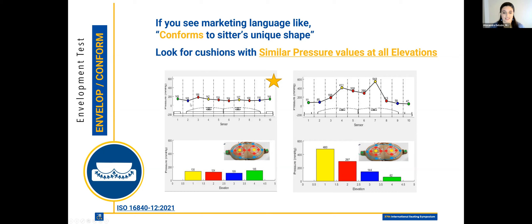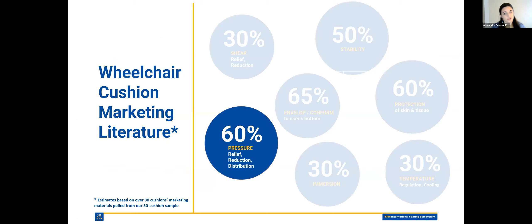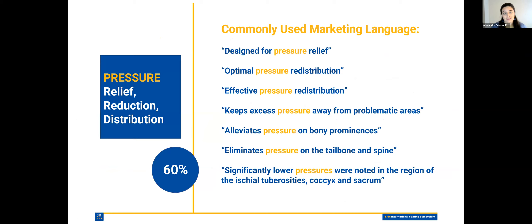Since we're talking about pressure, we can transition to the 60% of marketing literature that references pressure relief, reduction, and distribution. The language used includes: 'designed for pressure relief,' 'optimal pressure redistribution,' 'effective pressure redistribution,' 'keeping excess pressure away from problematic areas,' 'alleviating pressure on the bony prominences,' 'eliminating pressure on the tailbone and spine,' and 'significantly lower pressures noted in the regions of the ischial tuberosities, coccyx, and sacrum' — different ways of all mentioning pressure relief.